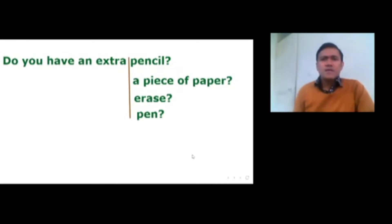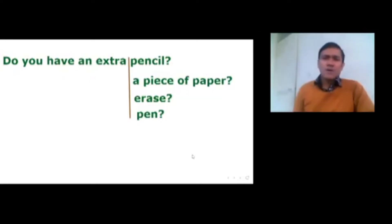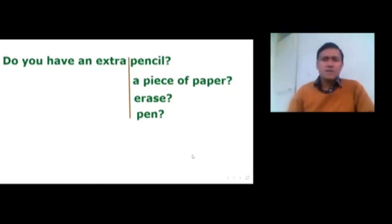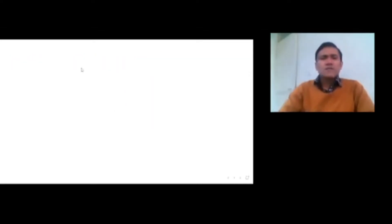You can say: Do you have an extra pencil? Or, do you have an extra piece of paper? Do you have an extra eraser? Do you have an extra pen? Or you can say, do you have an extra ruler? Or you can say, do you have an extra dictionary? So in this way, you can make requests to your partner or to your classmate. We can also ask these requests in another way.